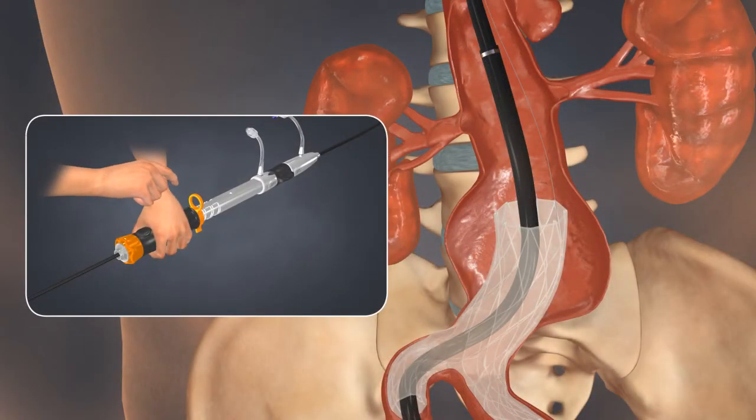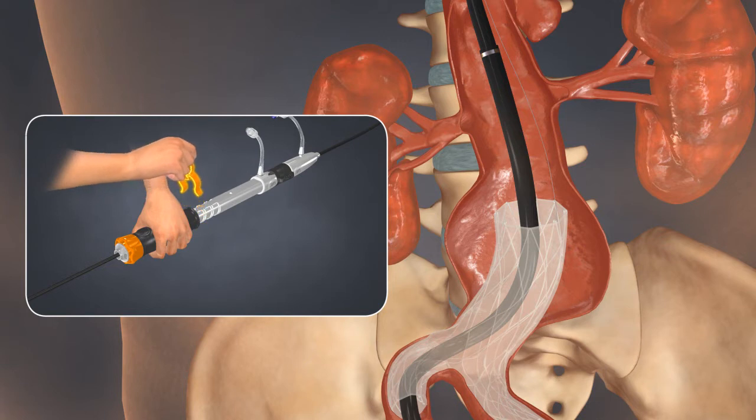With the delivery system at the desired location, remove the safety clip. Now you are ready to deploy the aortic extension.